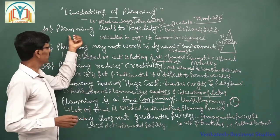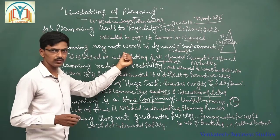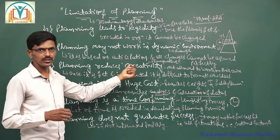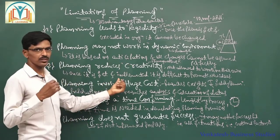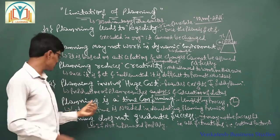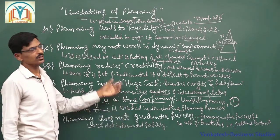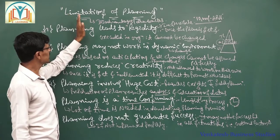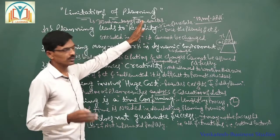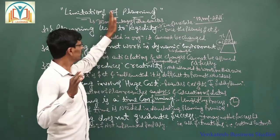To recap, the six limitations or drawbacks of planning are: planning leads to rigidity, planning may not work in a dynamic environment, planning reduces creativity, planning involves huge cost, planning is a time-consuming process, and planning does not guarantee success. These are all the limitations, disadvantages, drawbacks, or problems of planning.